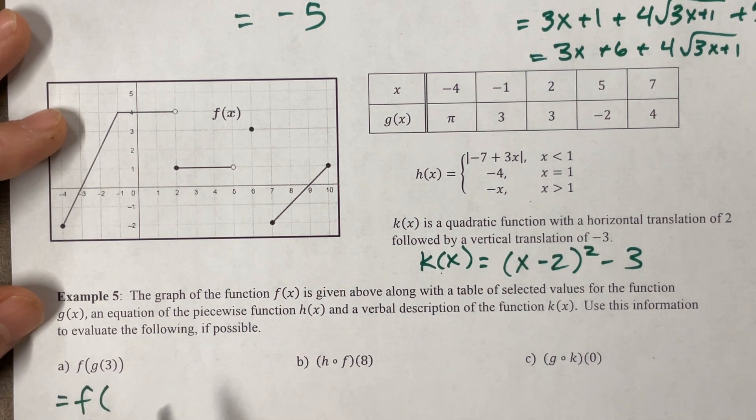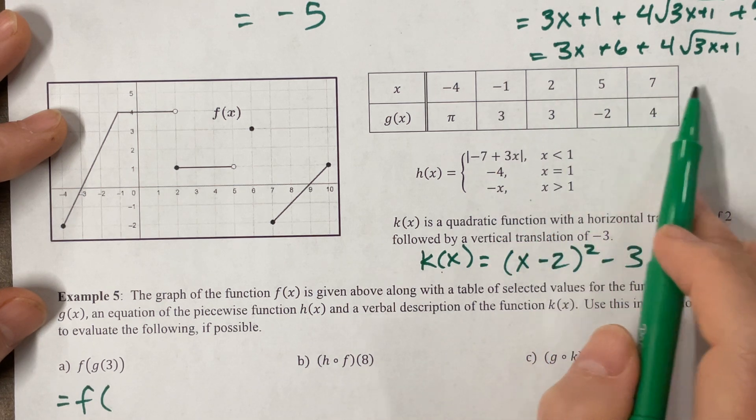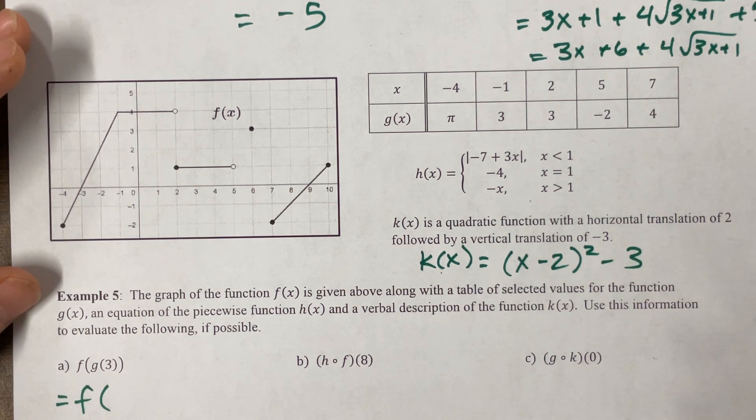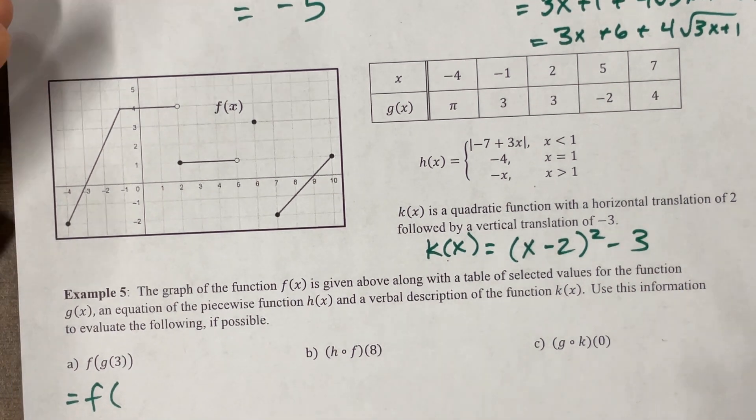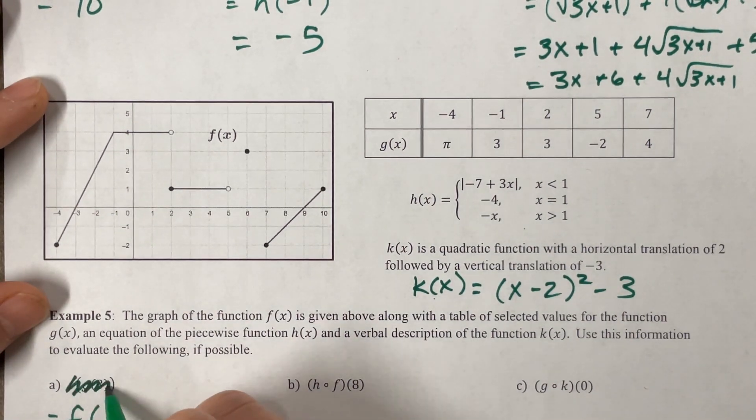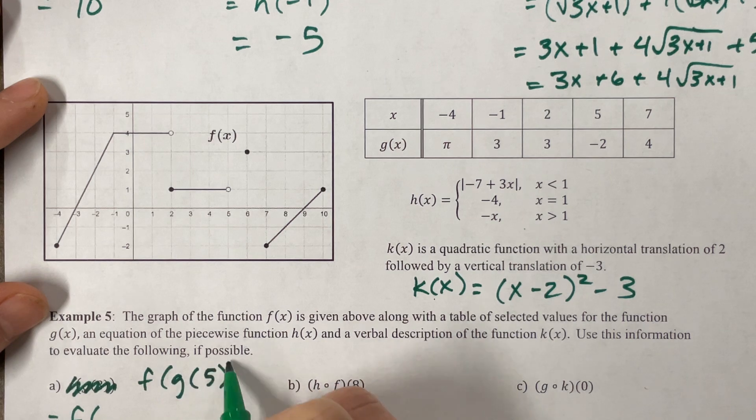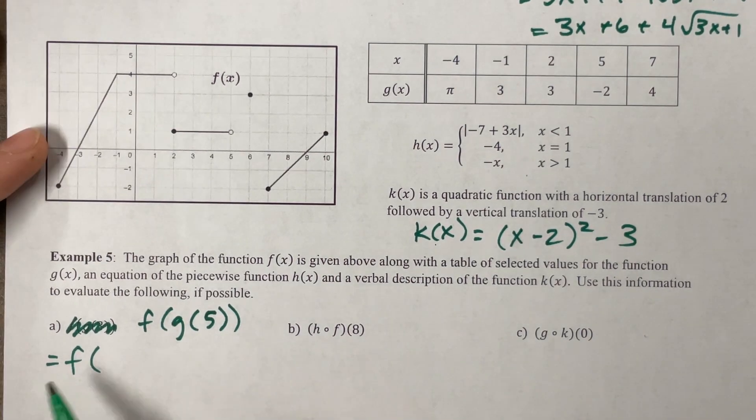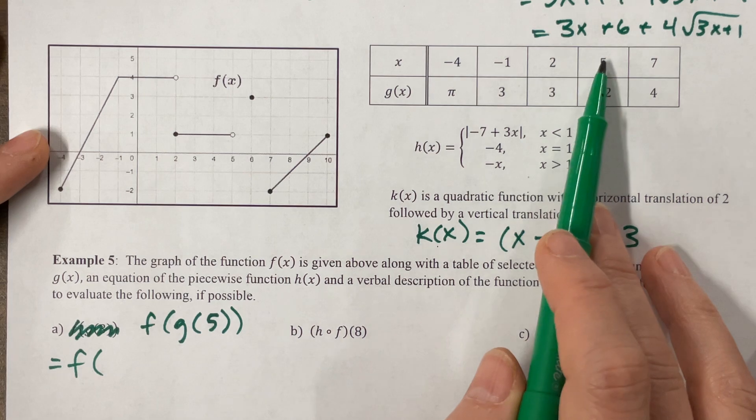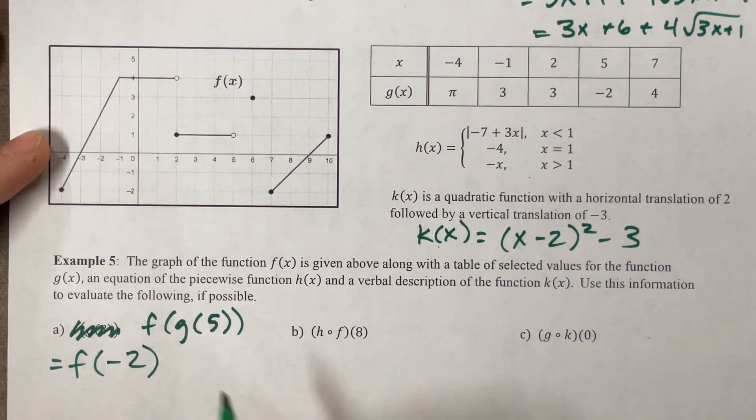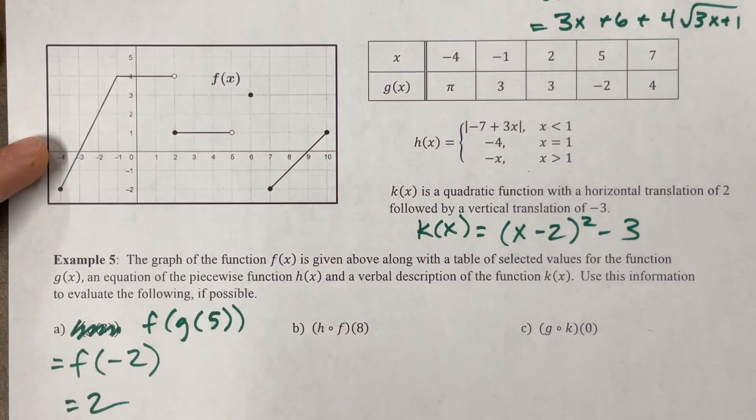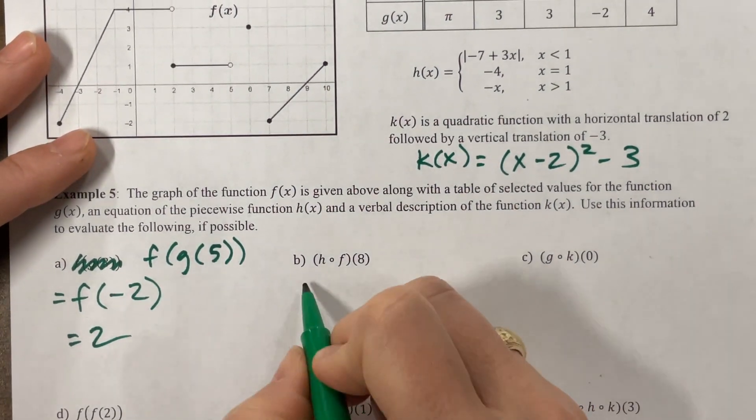This will be equal to f of g of 5. I don't see a g of 3 in the table. I wonder if you caught this typo later. Let's change this just so we can do something similar. F of g of 5. G of 5, I'm looking at an x value of 5 and my g value would be negative 2. So this would be f of negative 2. F of negative 2, that appears to be 2. Good job meaning I picked a decent little problem on the spot.